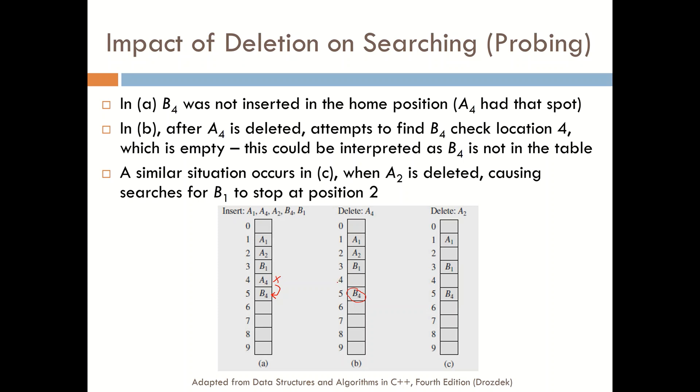Another situation similar to this one occurs if we were to remove A2, which is in this position. Then any search for B1 would initially hash into location one, but A1 is there. And so we would probe linearly and go to the next position and we don't find B1 here. And so we report that B1 is not found when B1 is in fact here. So how can we get around this issue?